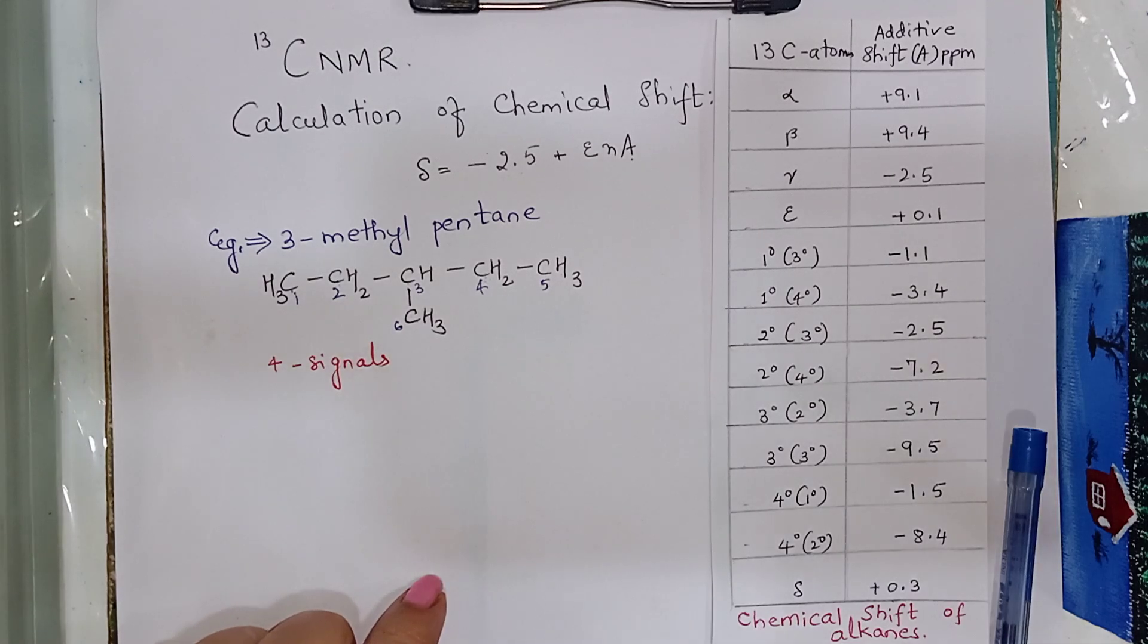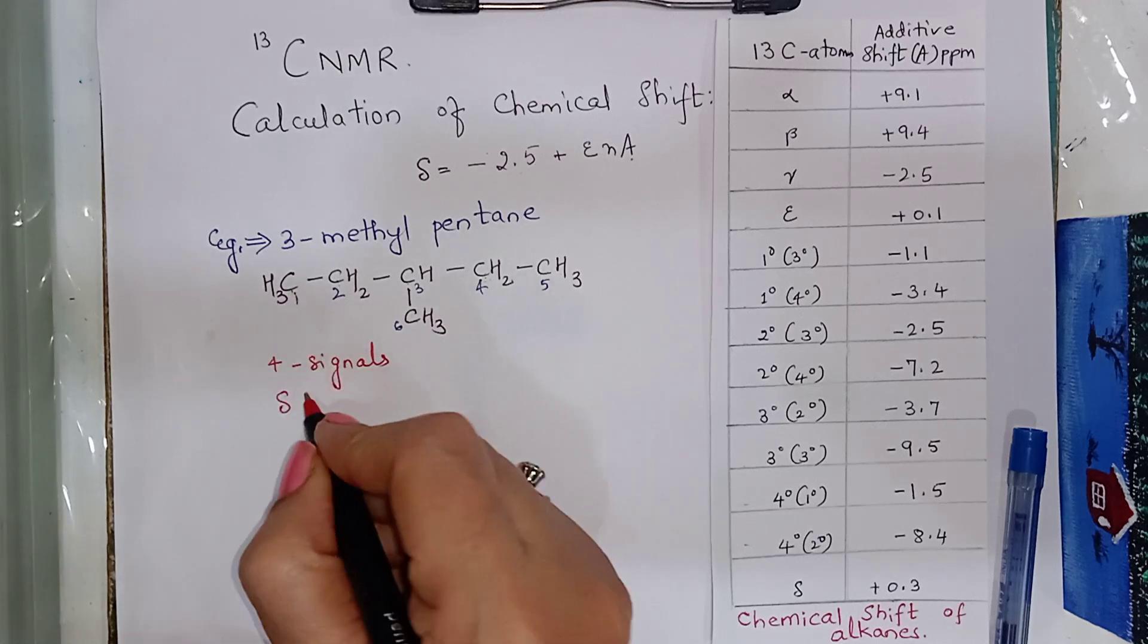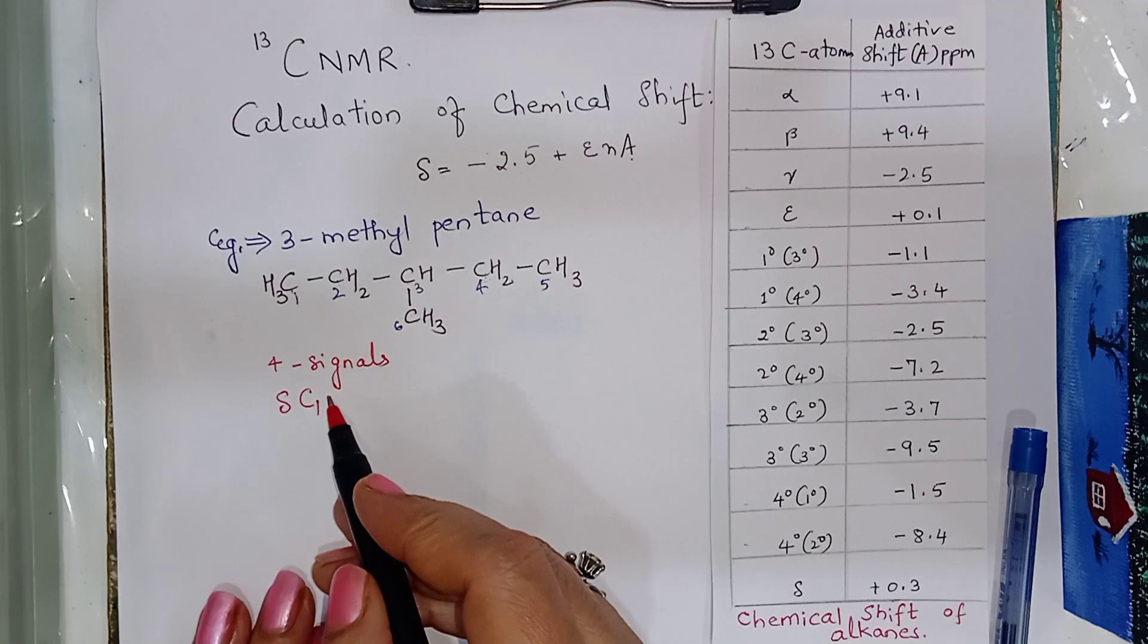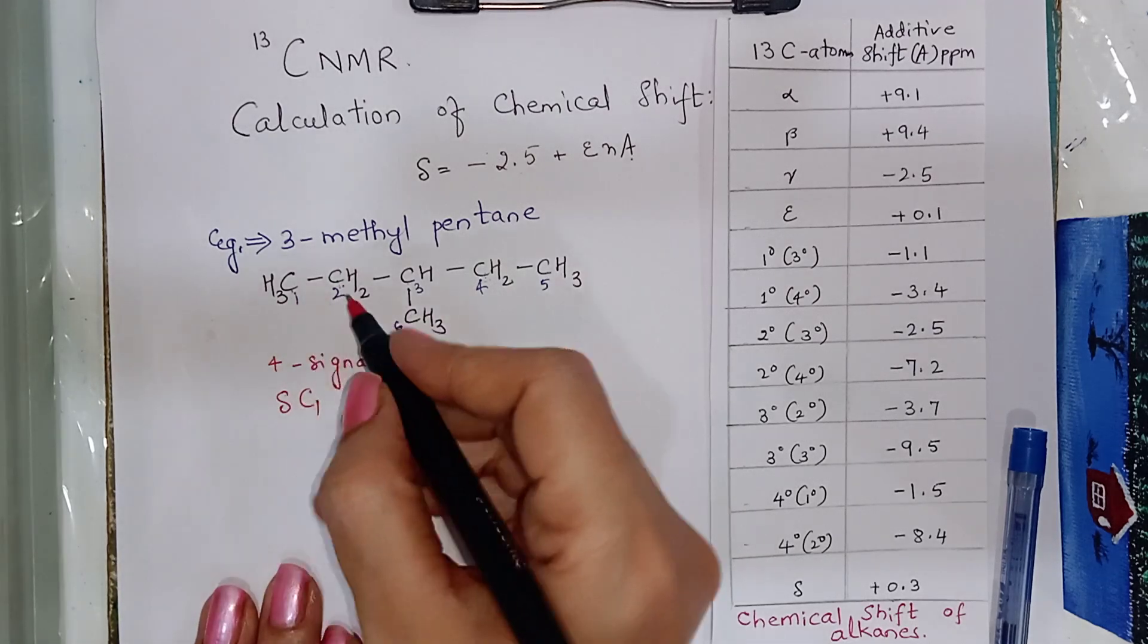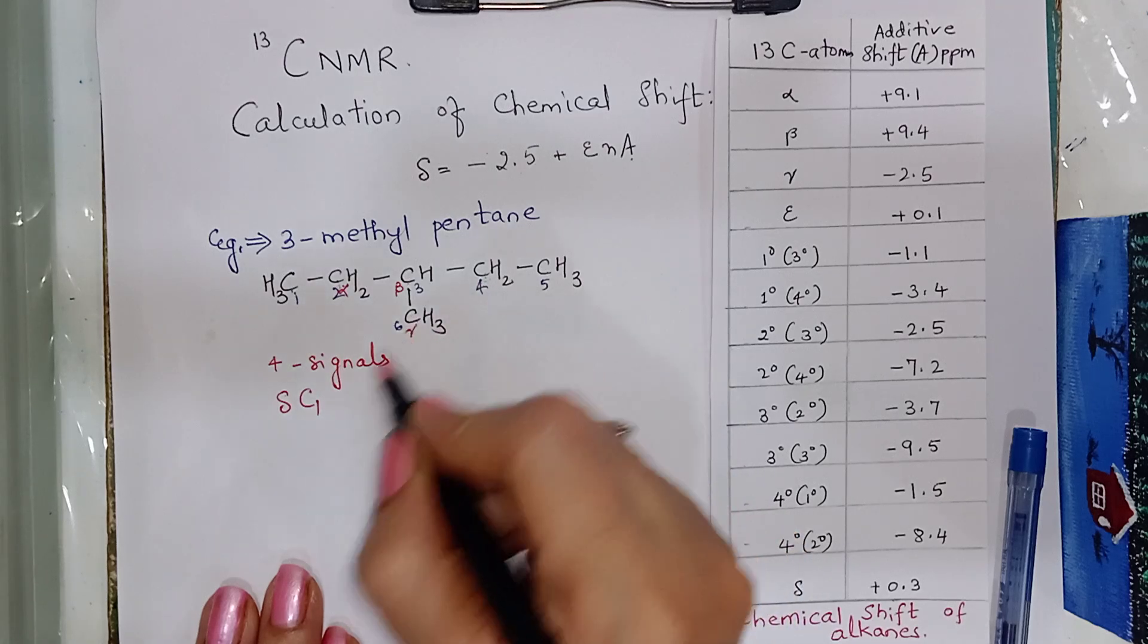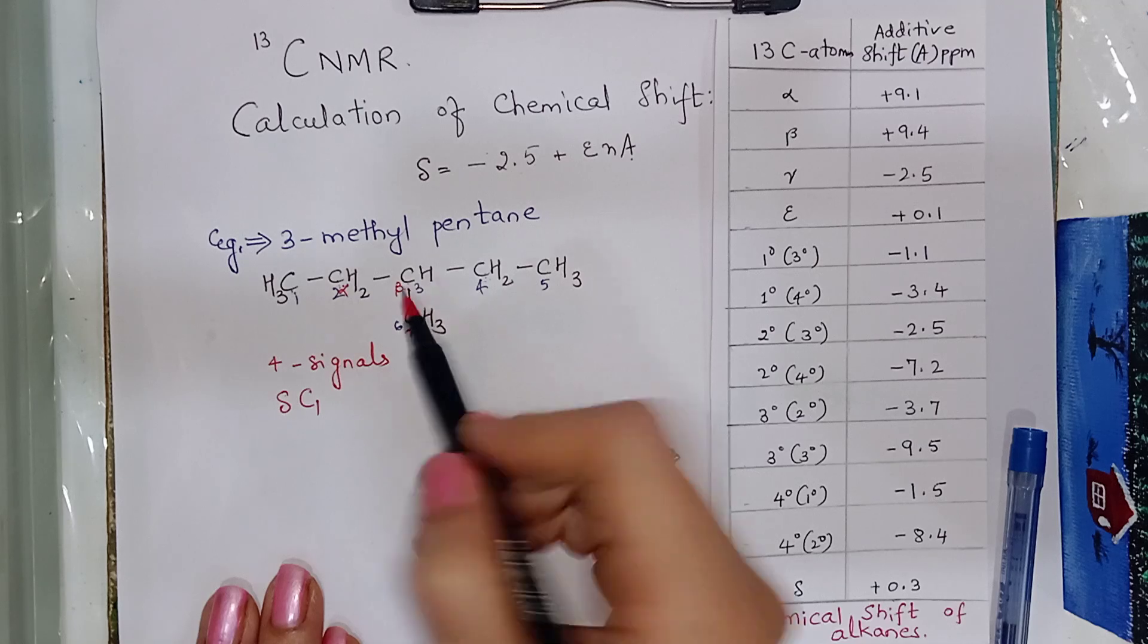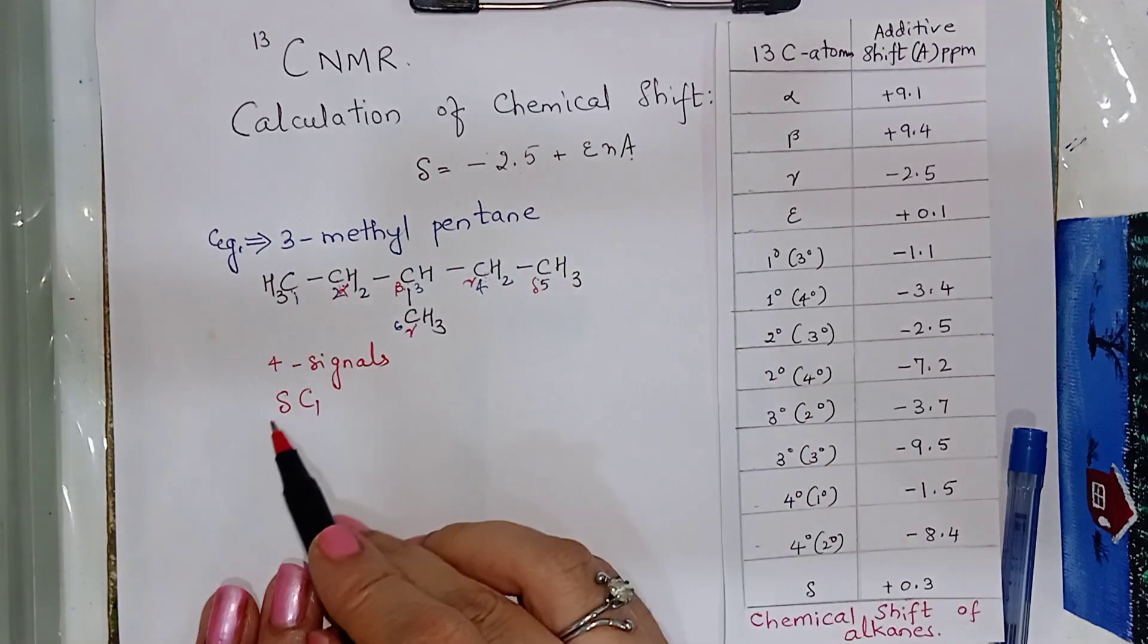Now let us see the chemical shift. That is, delta for first carbon, C1. For C1, this will be alpha, this will be beta, this will be gamma or this will be beta, this will be gamma and this will be delta.